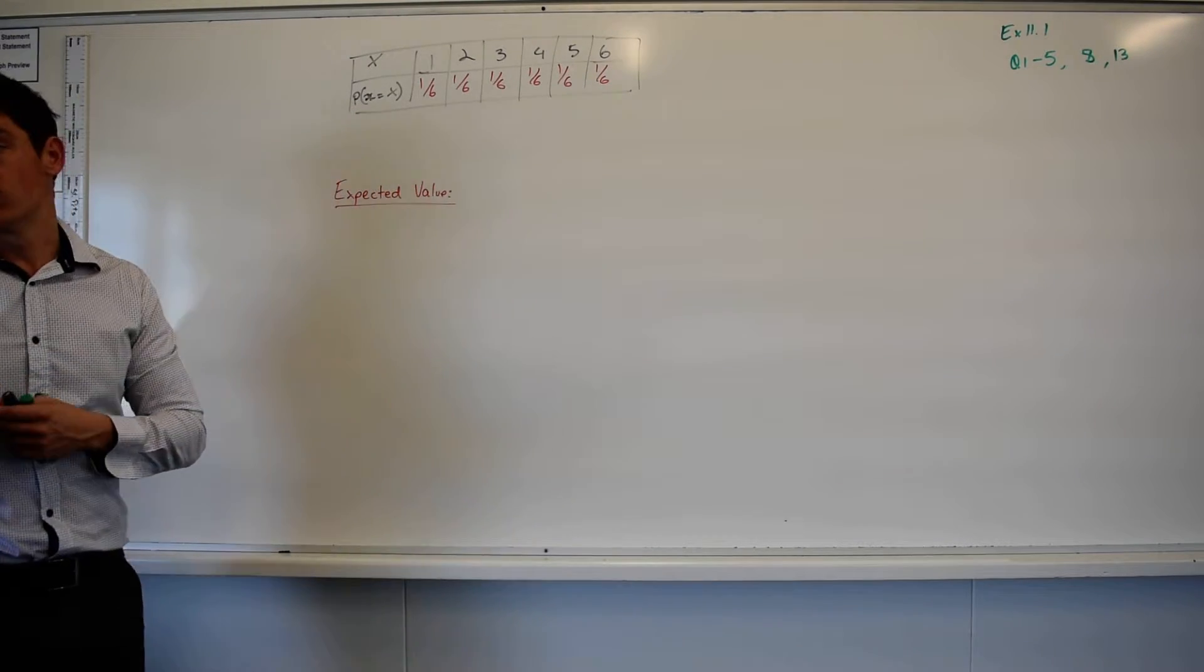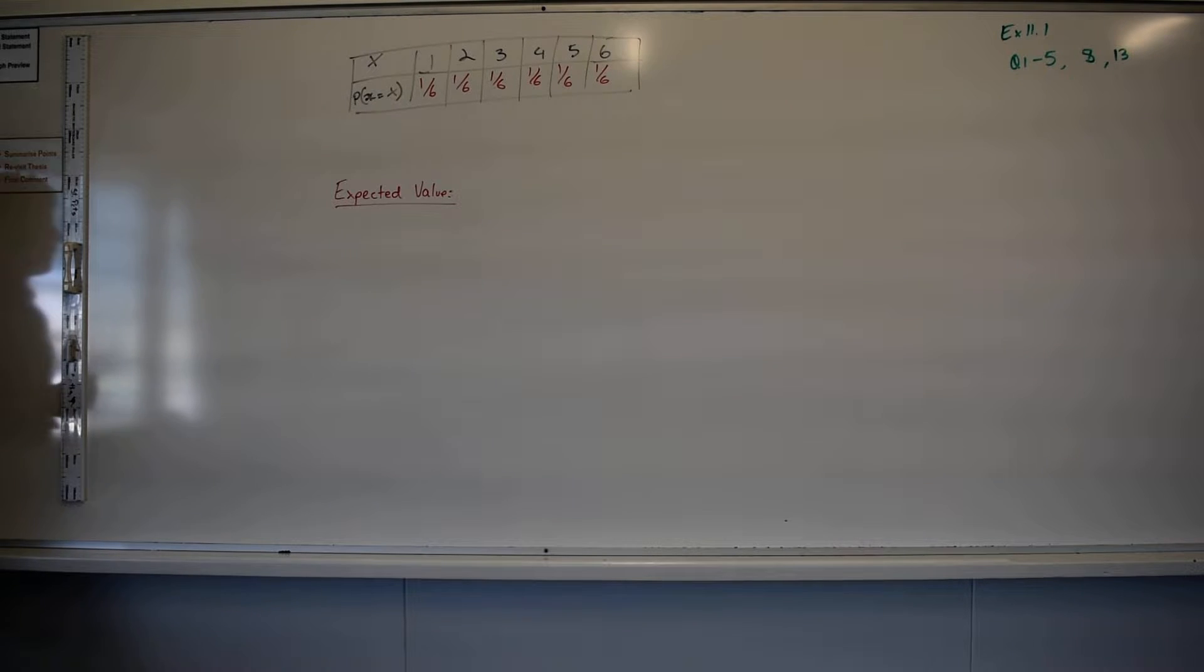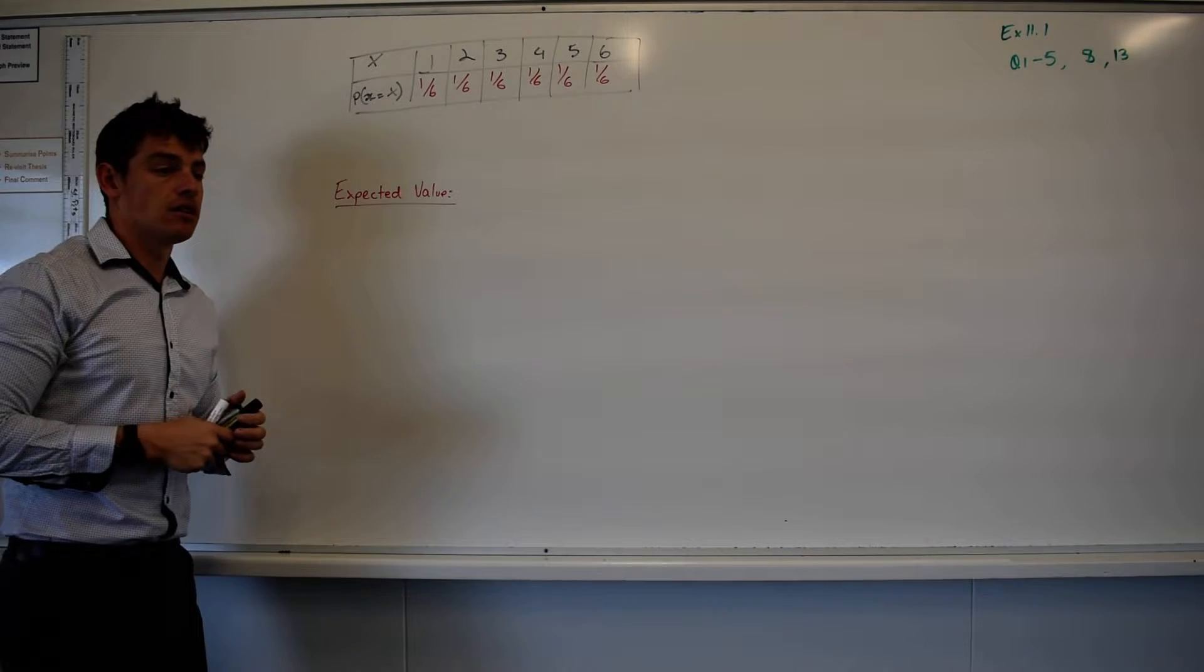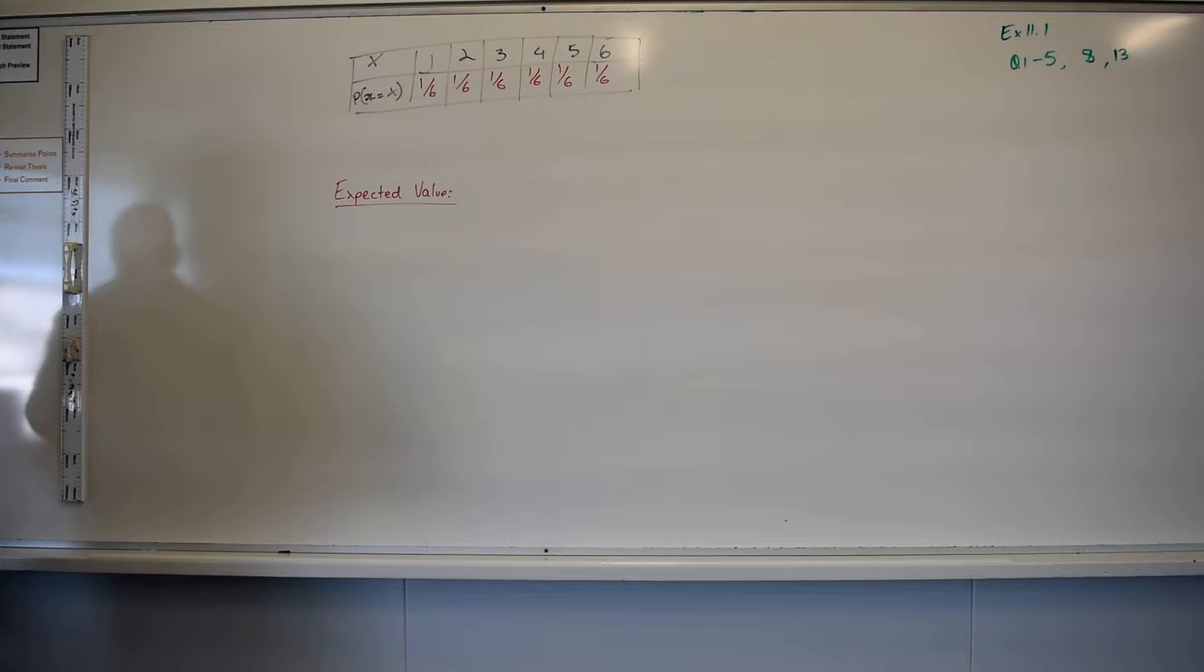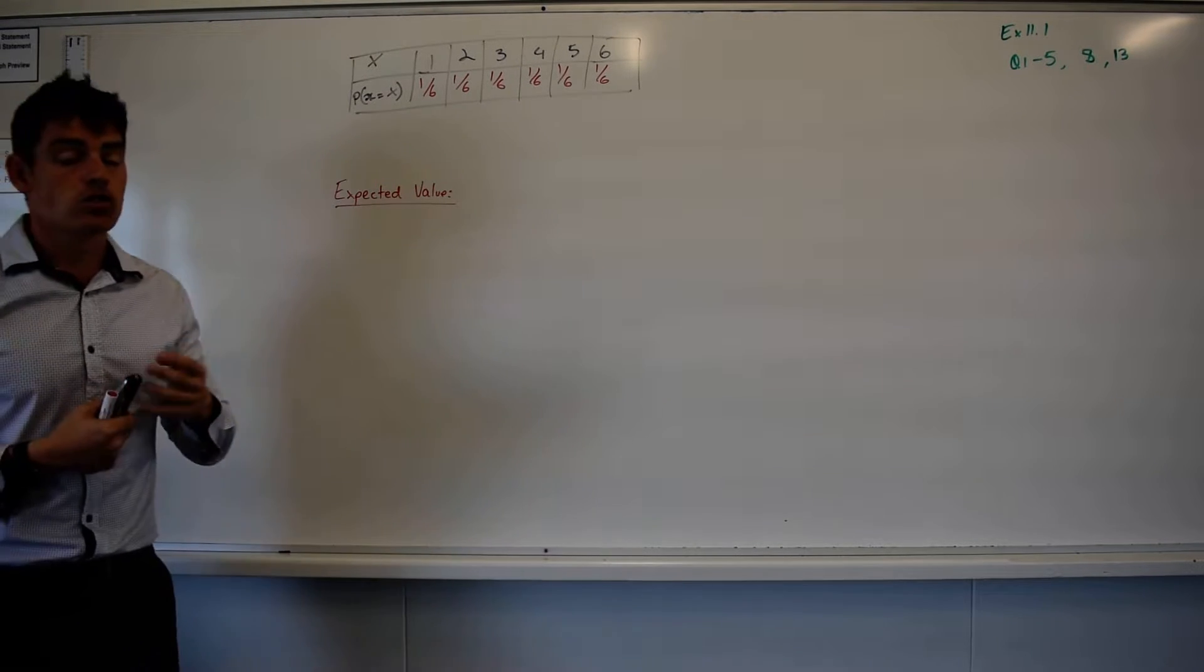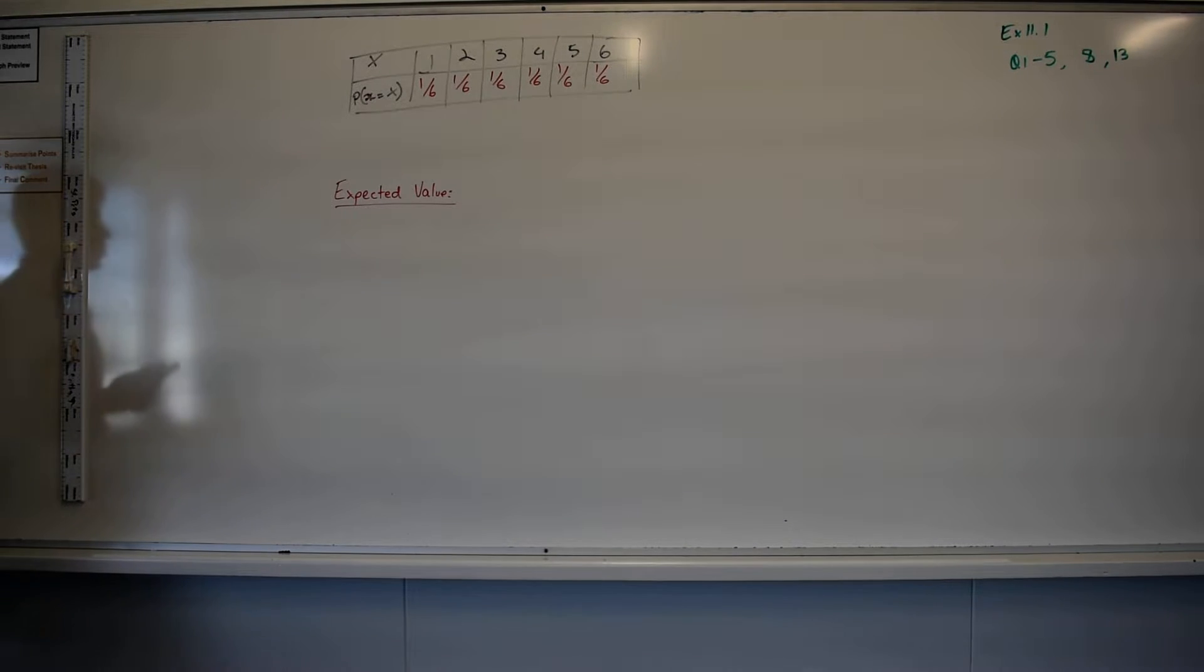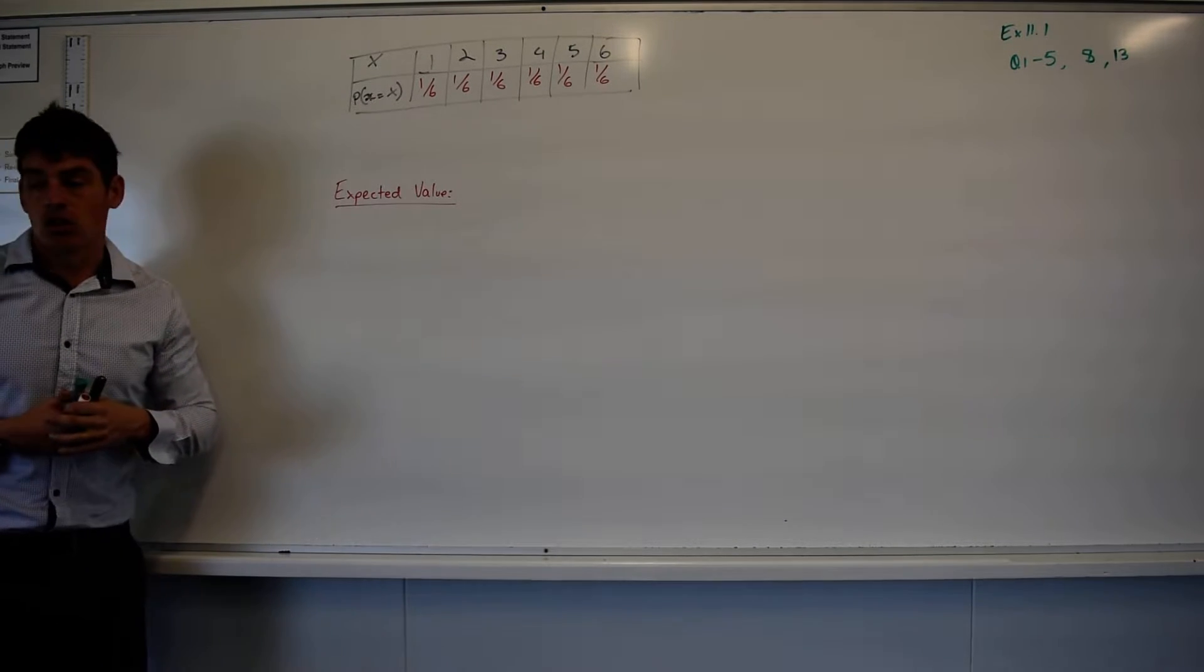And how do I know it's a probability distribution? Because if I add all those up, they should equal one. And we've been going through that as the lesson has unfolded. But now at the point where I'm saying, well, what's the expected value? If I was to roll a dice, what's the expected score that I'll be making?